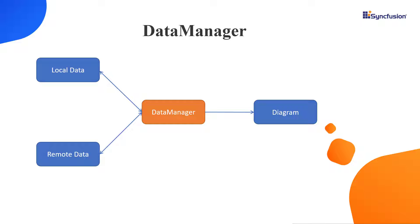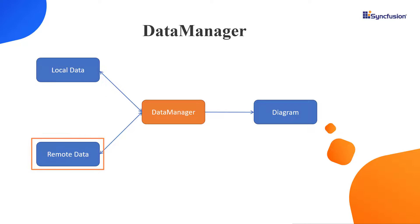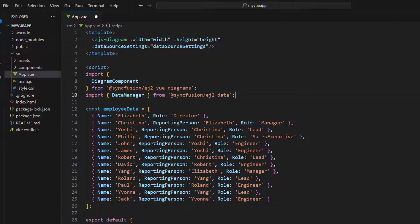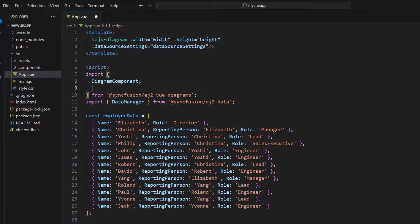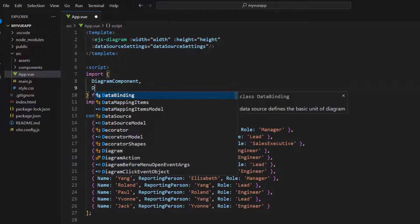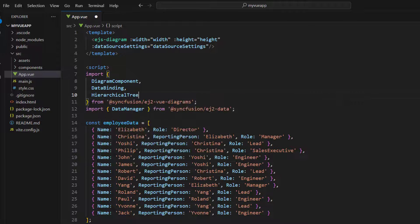The DataManager is a Syncfusion library component that acts as a gateway and interacts with both local and remote data sources. It provides functionalities for operations like creating, updating, deleting, and querying records. To render the organization chart, from the Syncfusion EJ2 Vue Diagrams package, I import the DataBinding and HierarchicalTree modules.